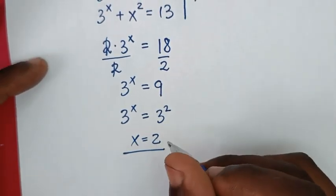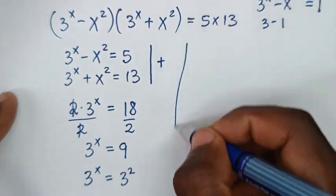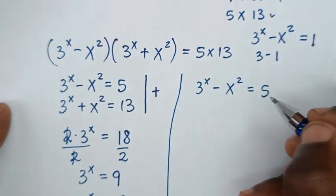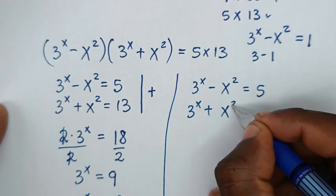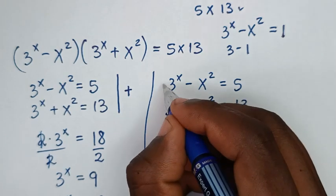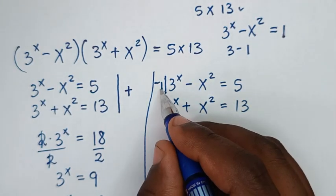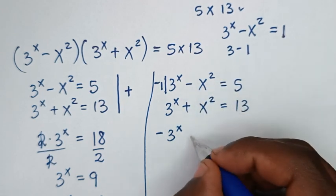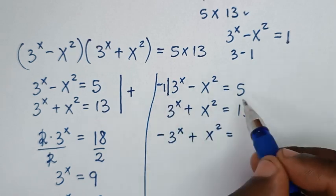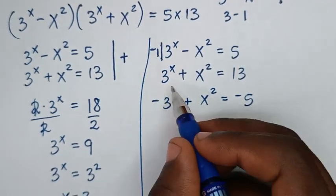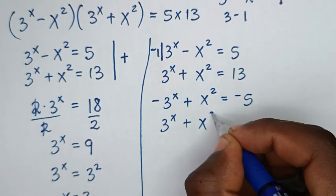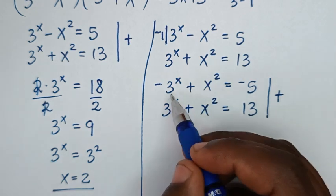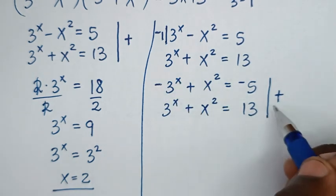But if we solve using another method, we get two solutions — not just x equal to 2. From the two simultaneous equations — 3 power of x minus x squared is equal to 5, and 3 power of x plus x squared is equal to 13 — we multiply the first equation by negative 1. So negative 3 power of x plus x squared is equal to negative 5. Then from the second equation, 3 power of x plus x squared is equal to 13. We add these two equations.